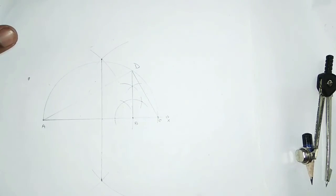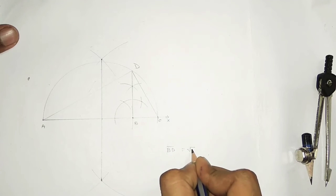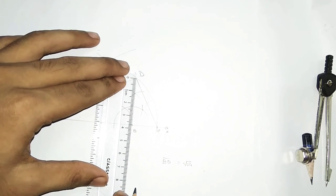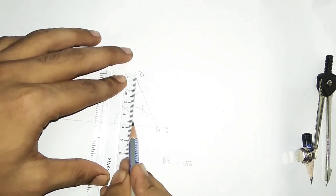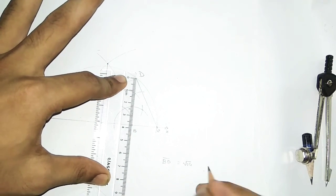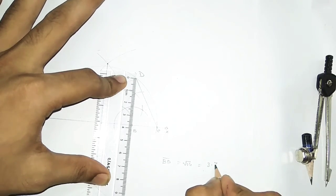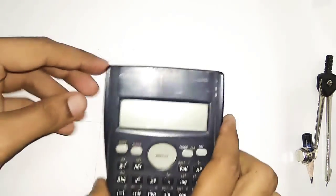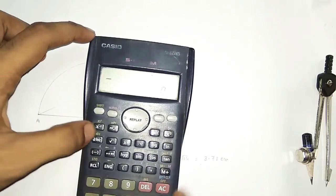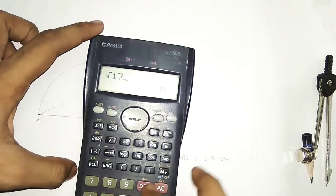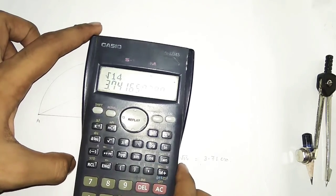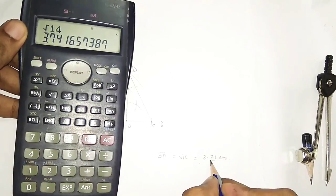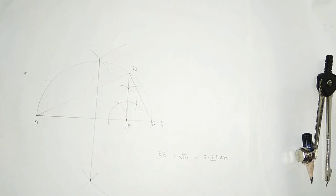The length of BD is the square root of 14. Let us measure it: taking the measurement of BD, we are getting approximately 3.71 cm. Now let us verify with a calculator — taking √14, the value is 3.7416. You can see that the measured value is approximately correct.